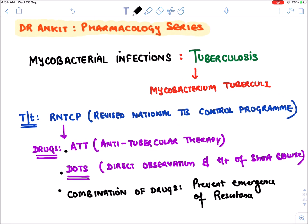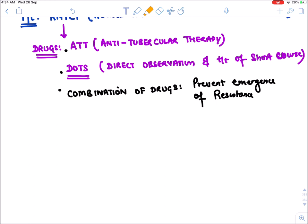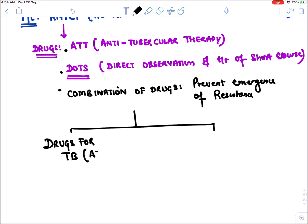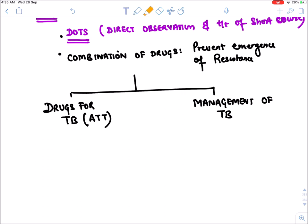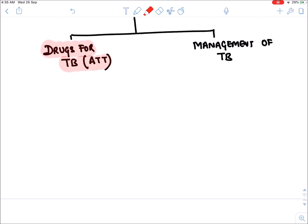In this section on tuberculosis, we will divide our discussion into two parts. The first part will cover drugs for TB, known as ATT. The second part will cover management of TB overall — that is, in which patient which drug to be given.